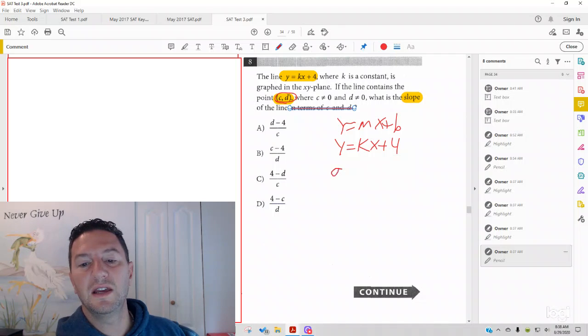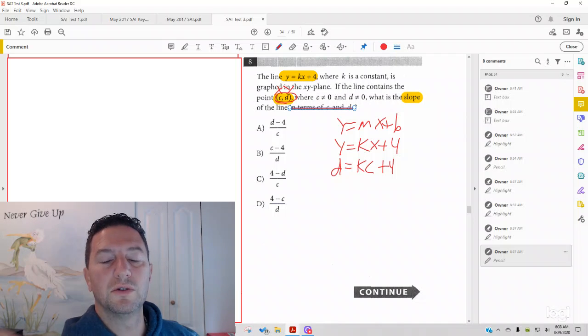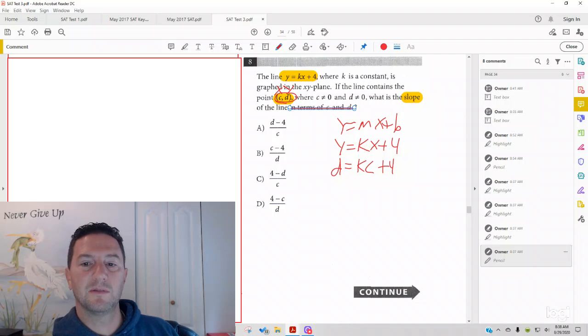But, they also use cd instead of xy. So, what you could say is d equals k times c plus 4. Remember, coordinates are always x, y, and all I did in that step is substitute in. So, when I ask you for the slope, all you have to do, like we said, is get the slope alone. Get the k alone.